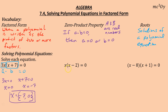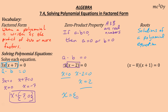Looking at the next one: x times the quantity (x − 2). There's no addition or subtraction between x and the parentheses, so x is one factor and (x − 2) is another factor, both equal to zero. We have A times B equals zero again. So x = 0, and setting x − 2 = 0 gives x = 2. My solutions are {0, 2}.